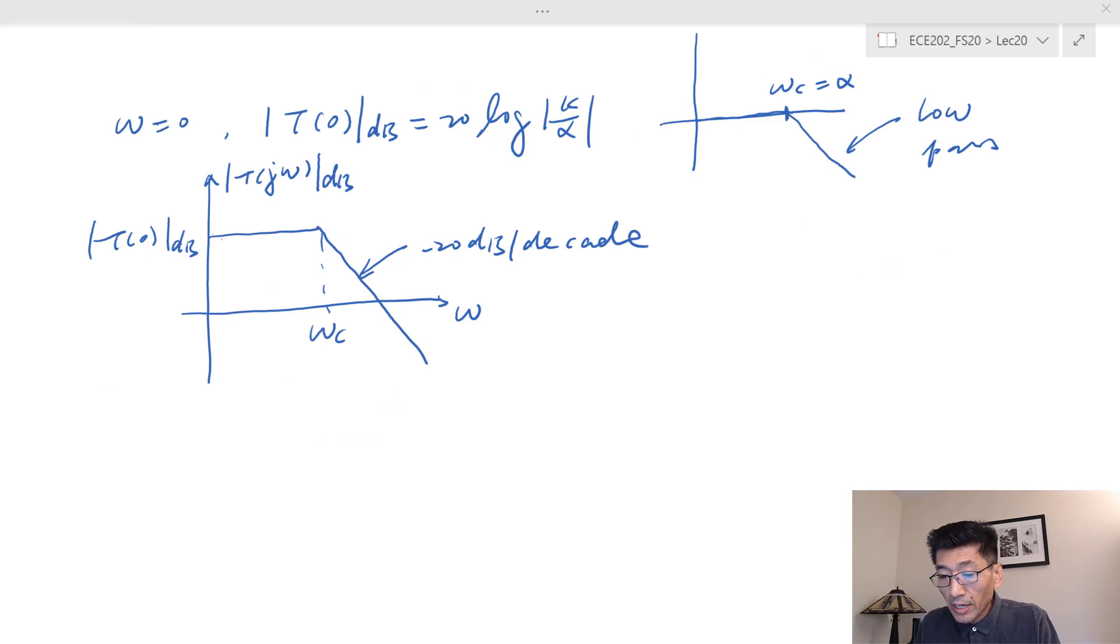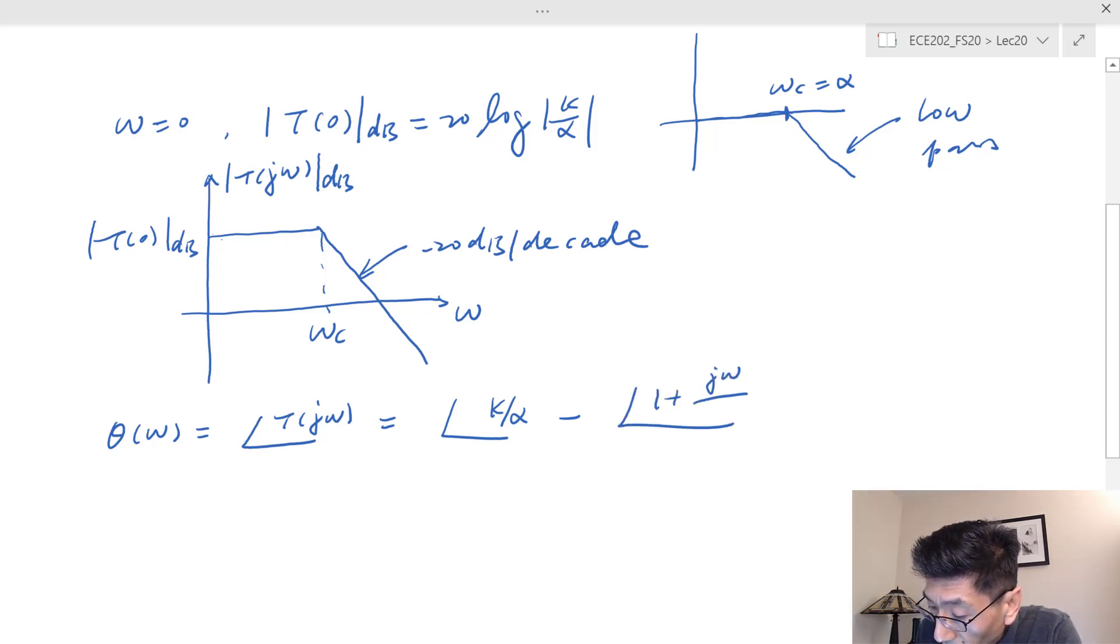Let's look at the phase plot. For the phase plot, θ(ω) is just the angle of T(jω). In this case, that's going to be the angle of k minus the angle of 1 plus jω/α. Because division in polar form means their angle would be subtraction.